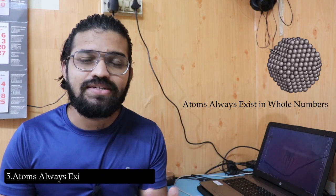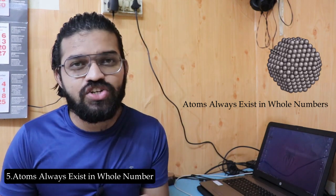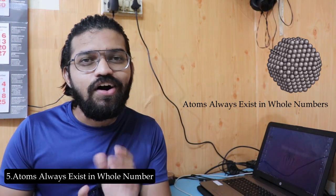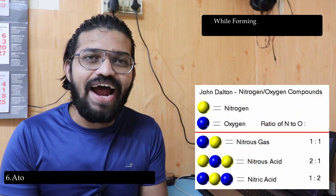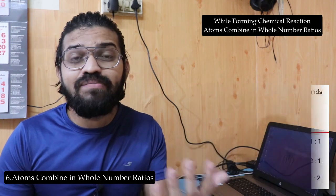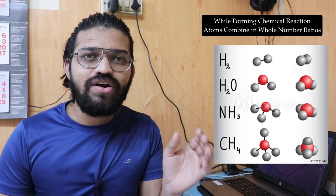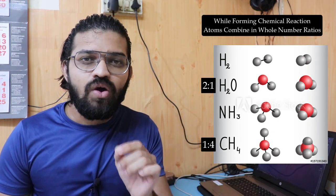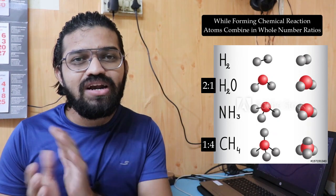The fourth point: atoms always exist in discrete whole numbers — they cannot exist in partial amounts or fractions. The fifth point: when forming a chemical compound, atoms combine in whole number ratios. For example, water (H2O) has a ratio of 2:1, and methane (CH4) has a ratio of 1:4.